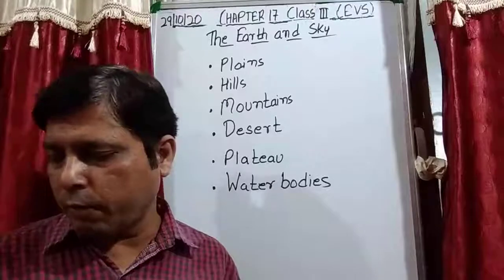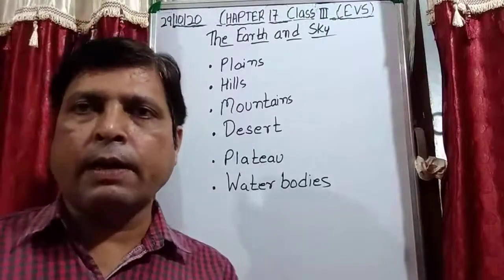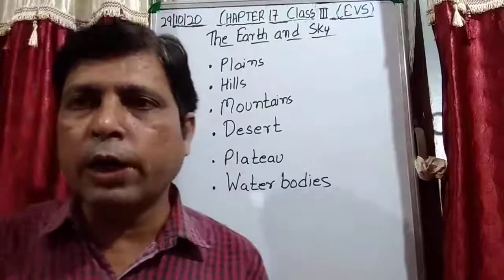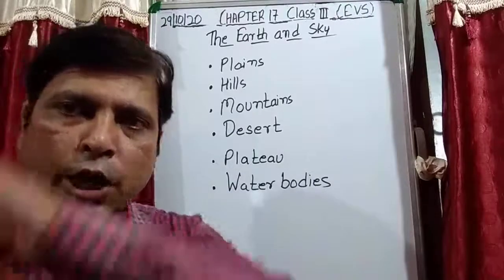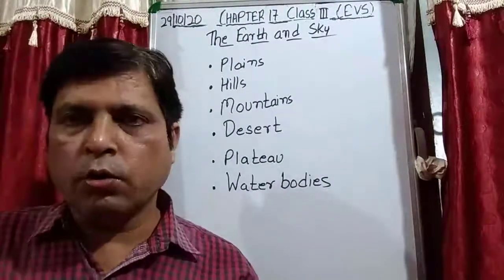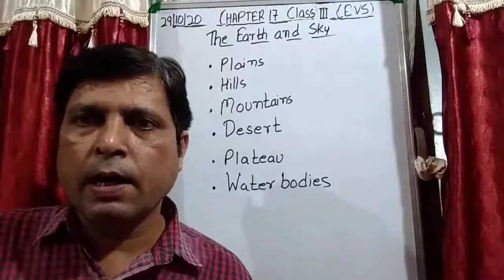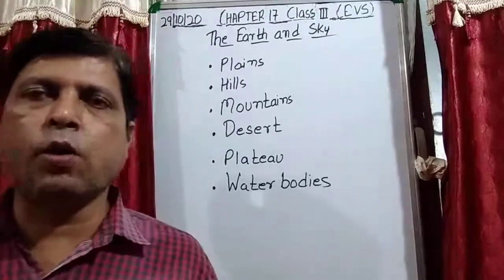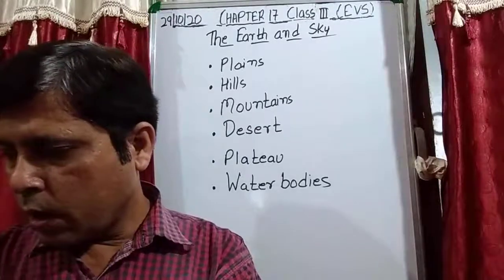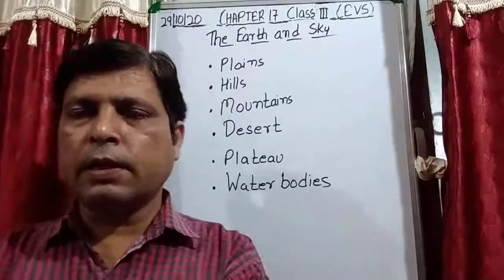We have already done a detailed discussion of all these things in our previous video. After that we discussed that the Earth is surrounded by a layer of air all around it, and this layer is called the atmosphere.